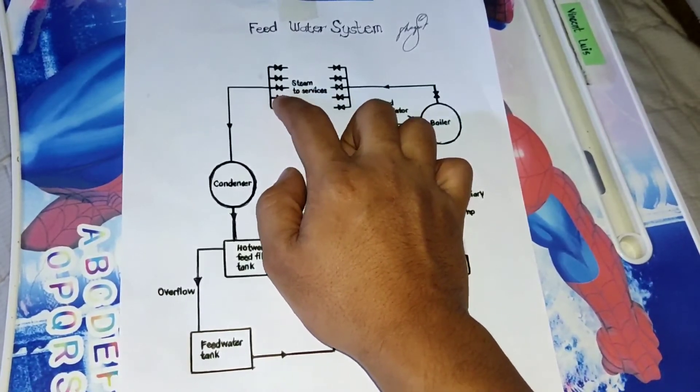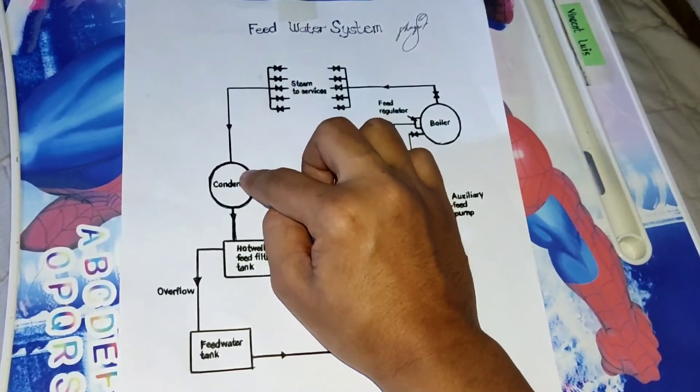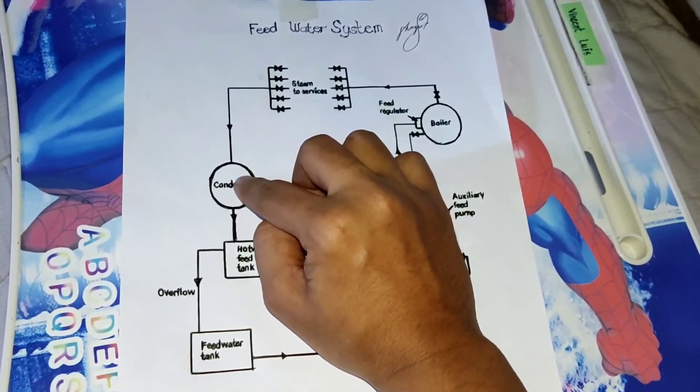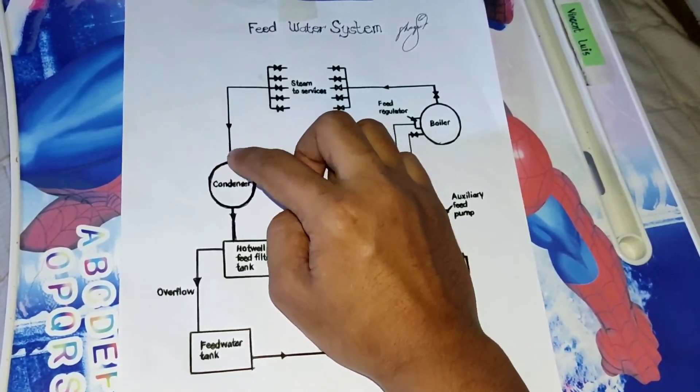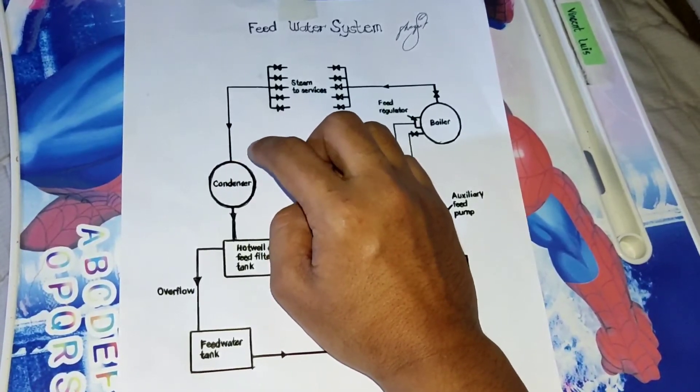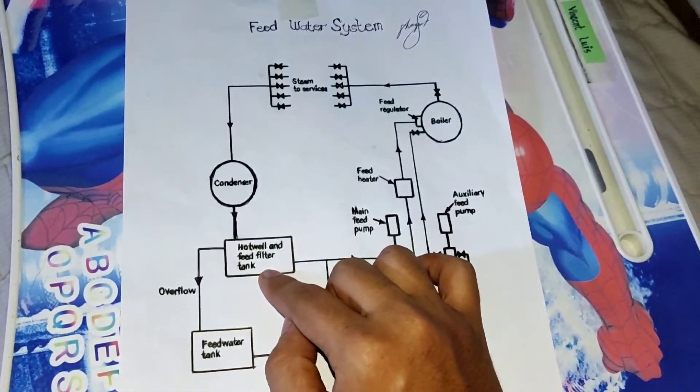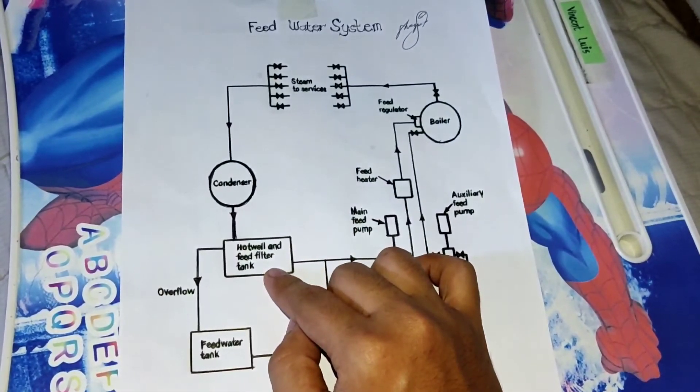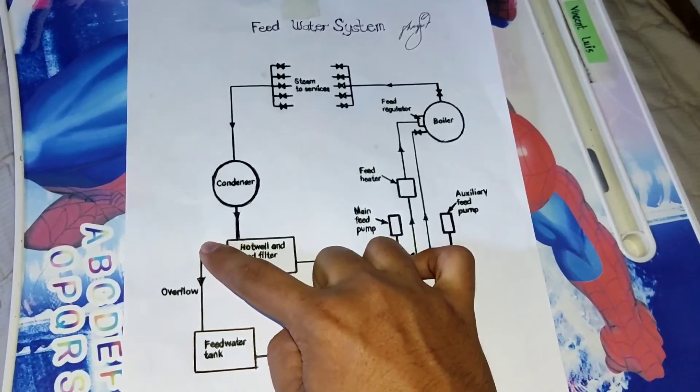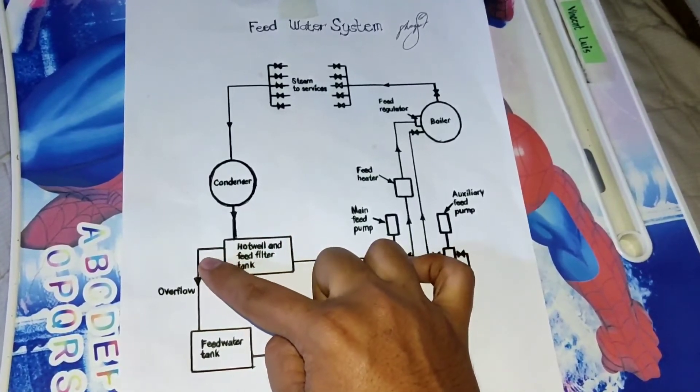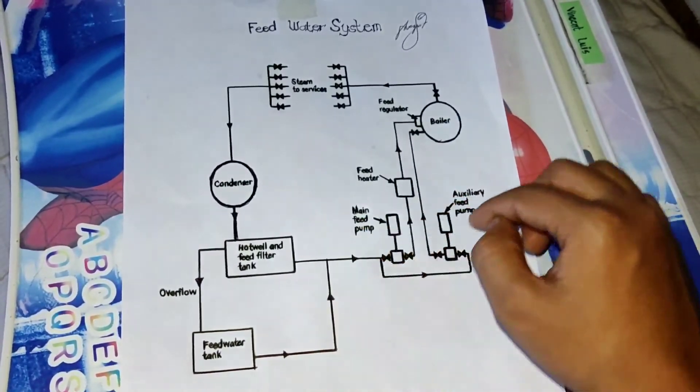So after the steam consumers, we have a return line that is connected to the condenser. So the purpose of the condenser is to convert the low pressure steam into water. After the low pressure steam is converted into water, the water will proceed to the hot well. And when the hot well is full, in case of overflow, the water will proceed to the feed water tank and the cycle will repeat itself.